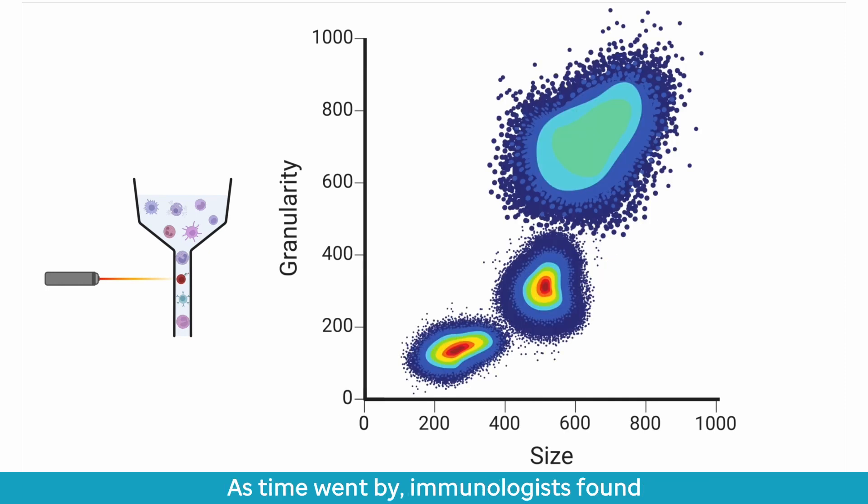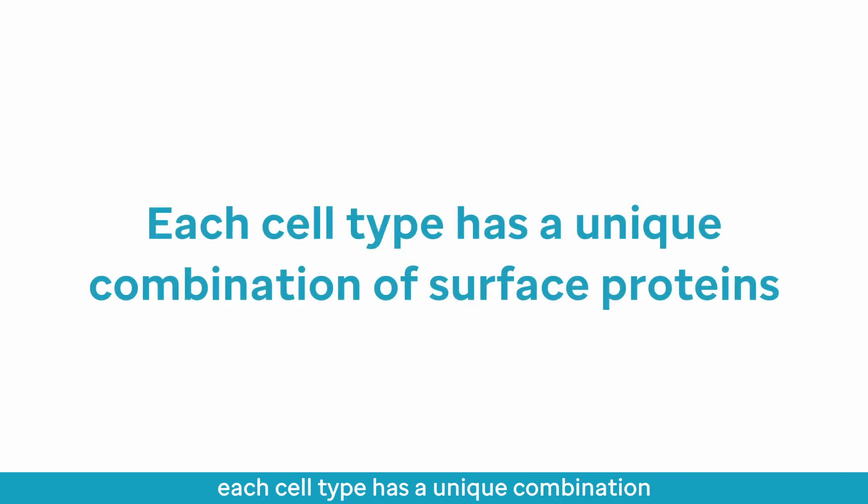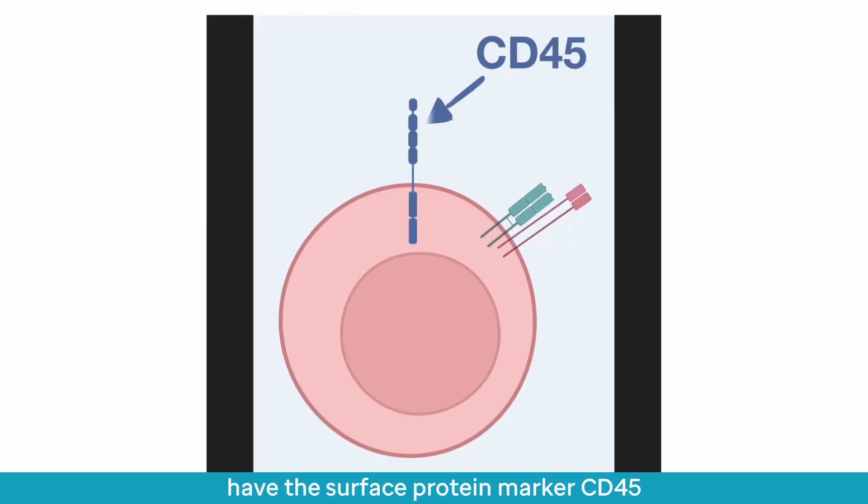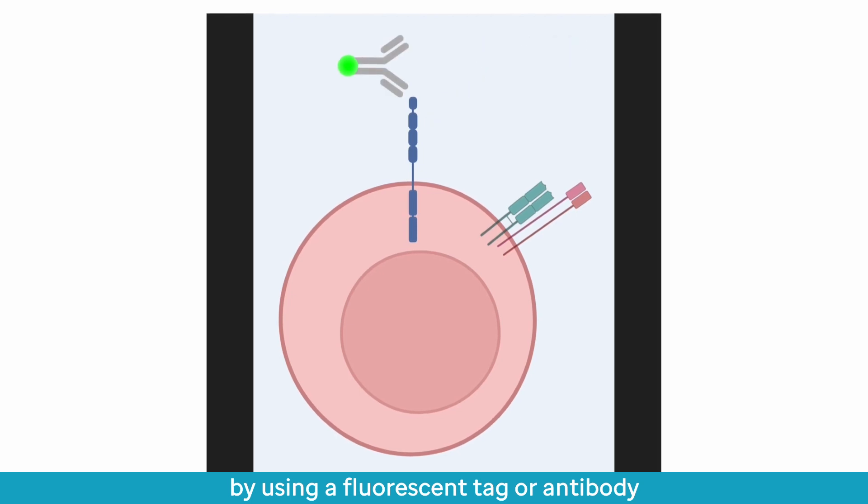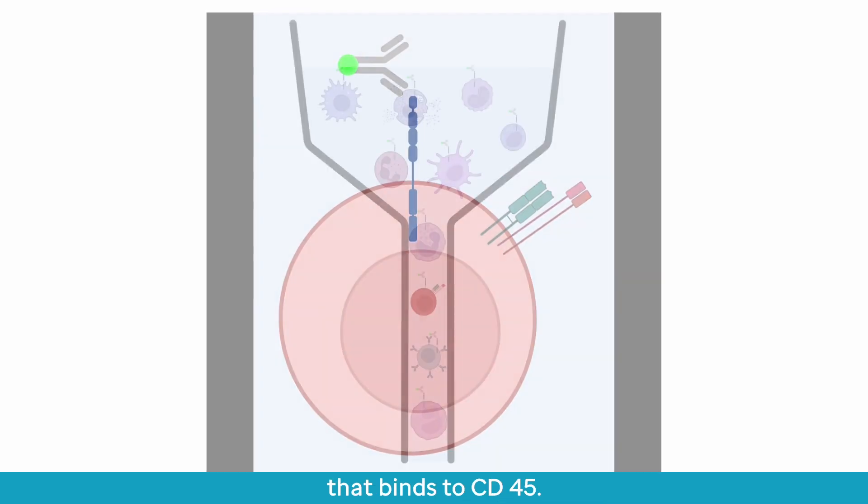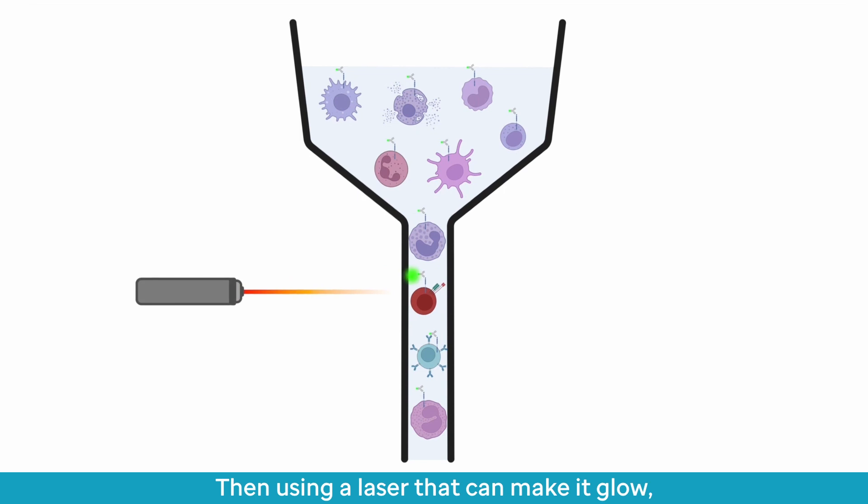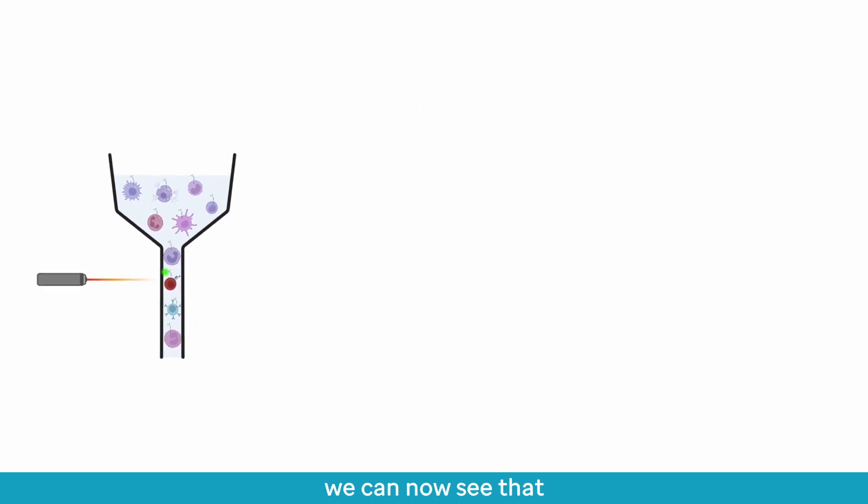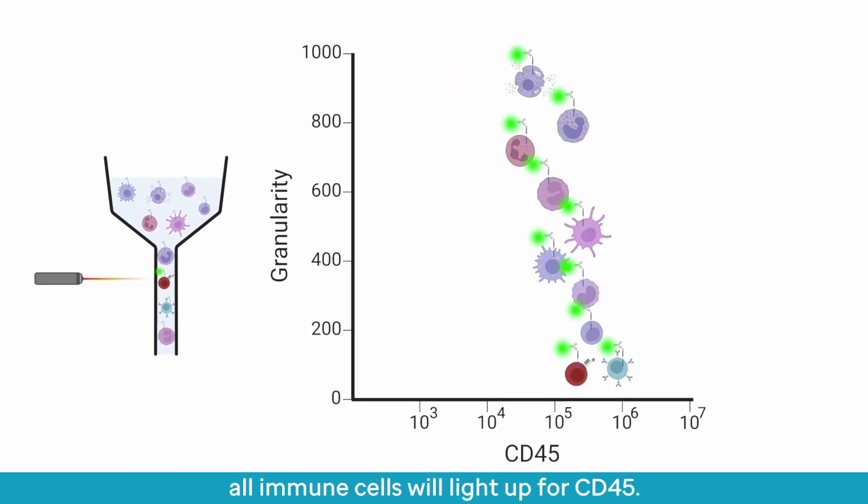As time went by, immunologists found that in addition to physical property differences, each cell type has a unique combination of surface proteins that could be used to further identify the cells. For example, all immune cells have the surface protein marker CD45. By using a fluorescent tag or antibody that binds to CD45, then using a laser that can make it glow, we can now see that all immune cells will light up for CD45.